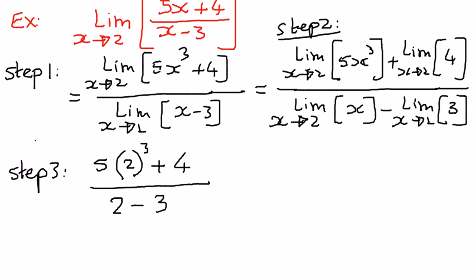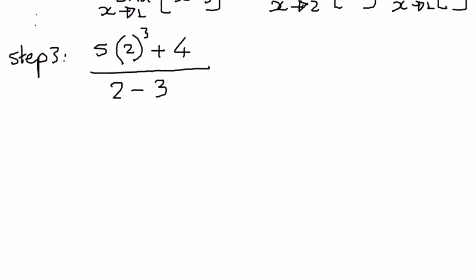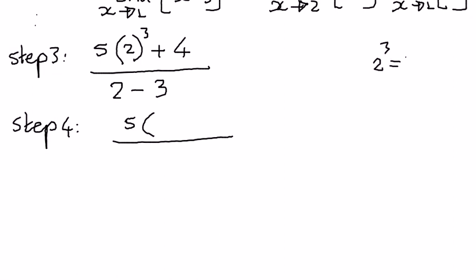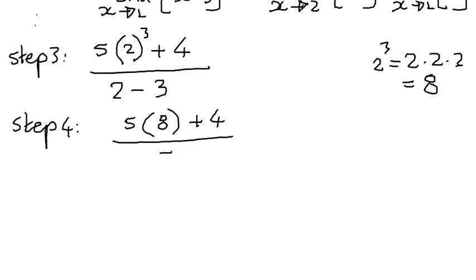So now in our next step we can simplify the math a bit more. We have 5 times 2³. 2³ means the base number 2 is repeated 3 times: 2 times 2 times 2. 2 times 2 is 4, and 4 times 2 is equal to 8. So instead of 2³ we can write 8, plus 4, divided by 2 - 3, which is negative 1.